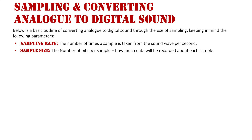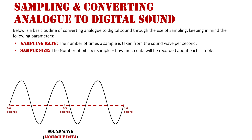Let's illustrate this in reference to sampling rate and sample size when converting an analog wave to a digital wave. Here is an analog wave. As discussed in a previous video, waves tell us things such as amplitude — the volume of the sound — the wavelength, which tells us the pitch, with further apart waves being deeper and closer together waves being higher pitched — and frequency, how many waves occur per second, measured in hertz.